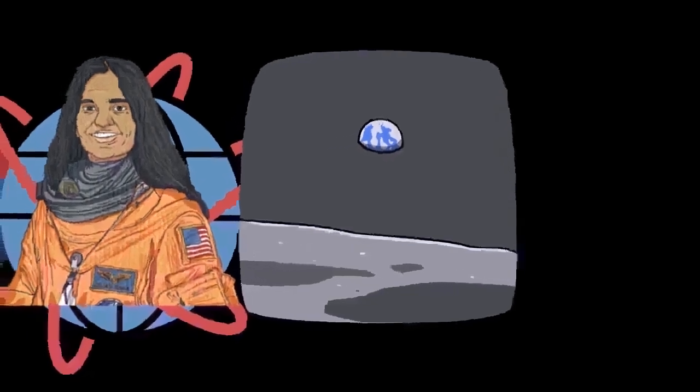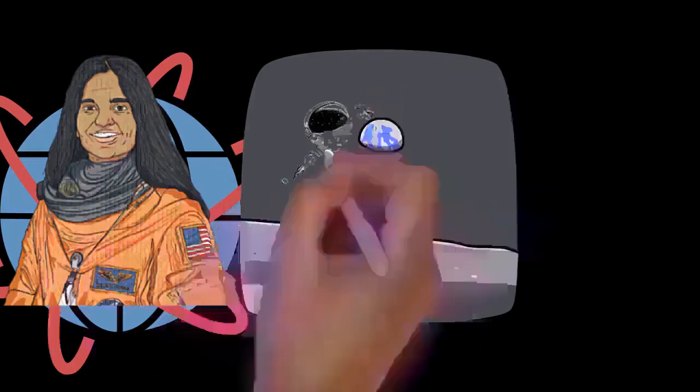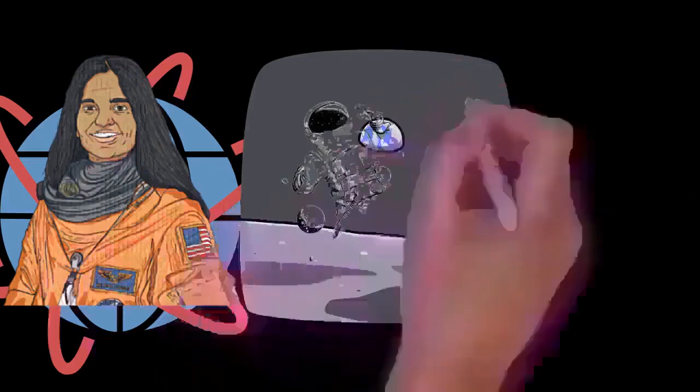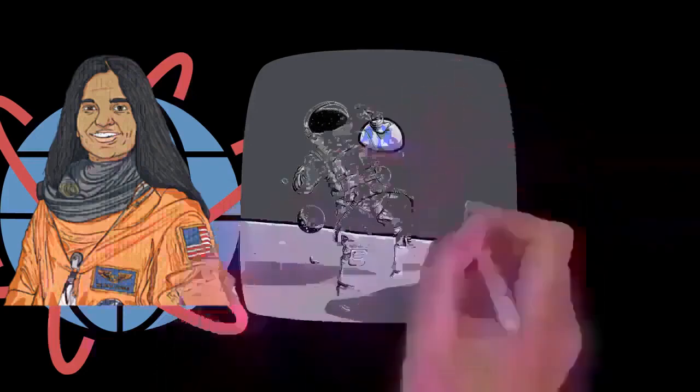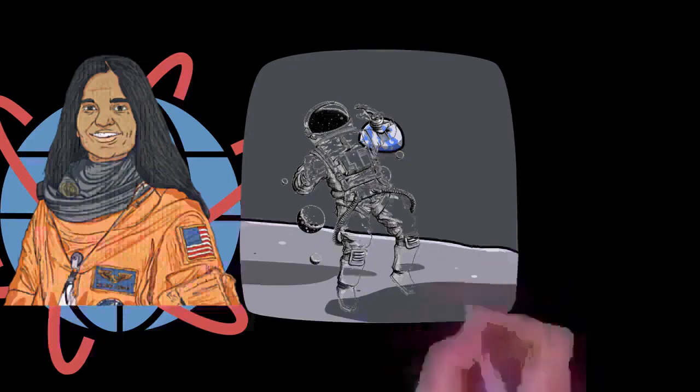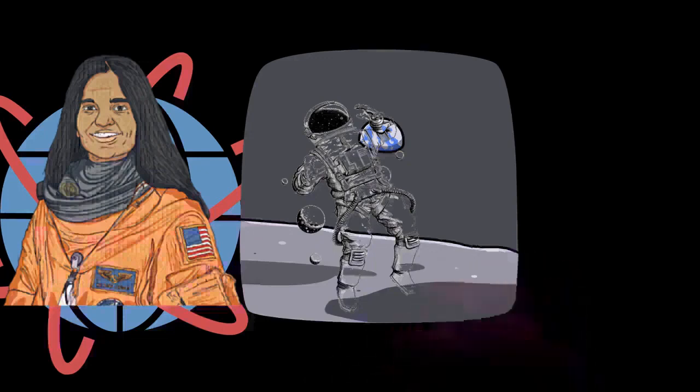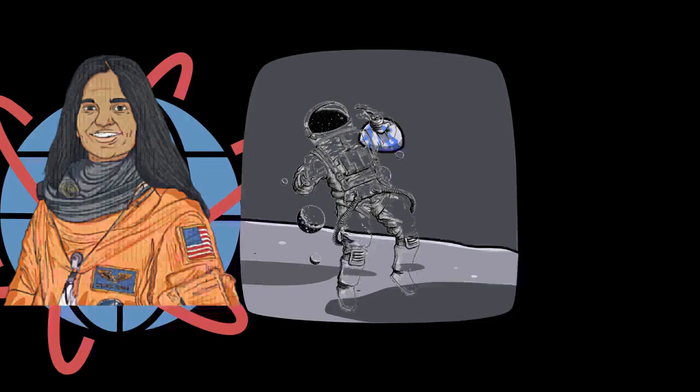Kalpana Chawla was born on March 17, 1962 to a Punjabi Hindu family in Karnal. She was fascinated by airplanes and flying from an early age, visiting local flying clubs and watching planes with her father. Her date of birth was falsified by her family to July 1, 1961 to allow her to become eligible for the matriculation exam.